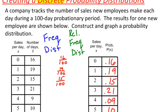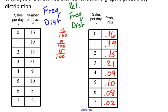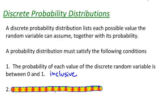If I look at a probability distribution I've created before — you may have seen this one already — I've got a random variable x representing sales per day, and here's the probability of each possible value: 0.16, 0.19, 0.15, 0.21, 0.09, 0.10, 0.08, and 0.02. None of those are greater than 1 or less than 0, so I have satisfied the first condition. But there's another condition we need to check as well.